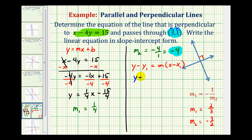So we'll have y minus 1 must equal negative 4 times the quantity x minus 3. Now this is the equation of the line that we need, but since we do want this in slope-intercept form, we now need to solve this for y.